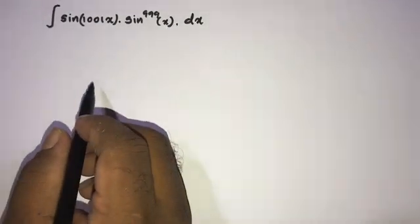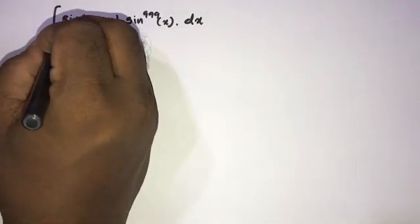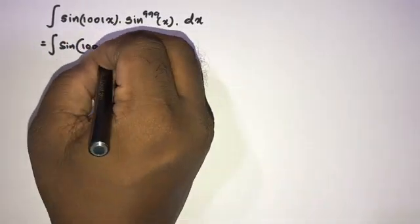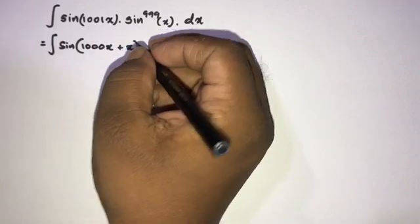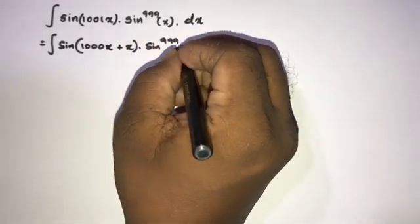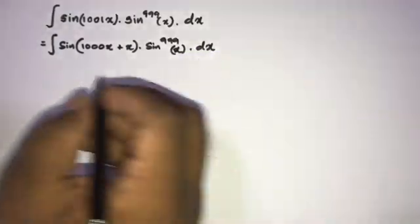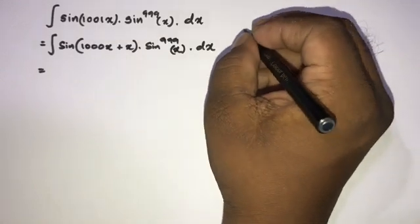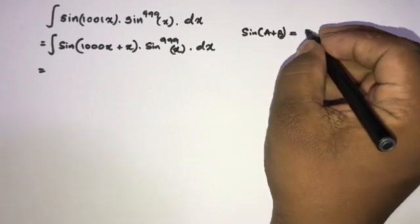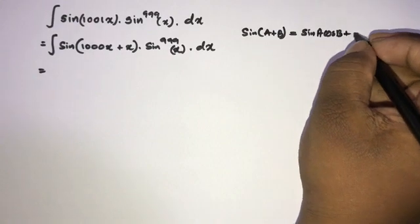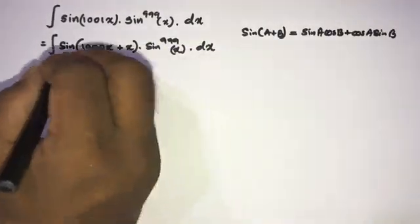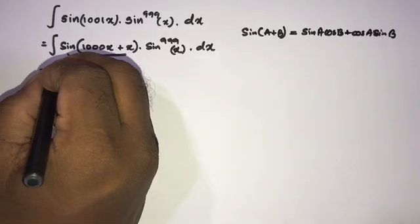To begin, I am going to rewrite sine of 1001x as sine of 1000x plus x, times sine to the 999th power of x, dx. We know the trigonometric formula sine of a plus b equals sine of a cosine of b plus cosine of a sine of b. Now we can apply this formula.